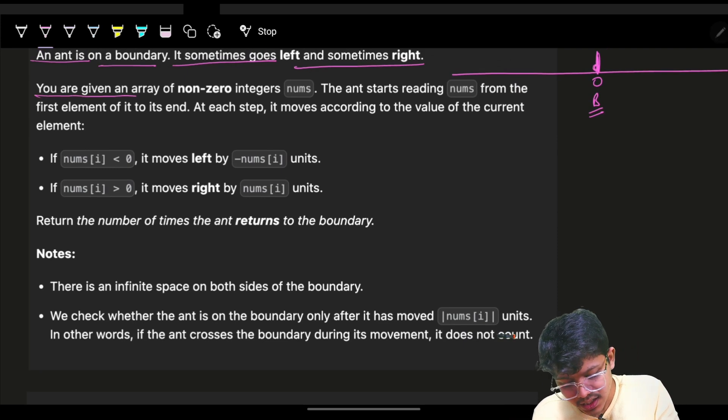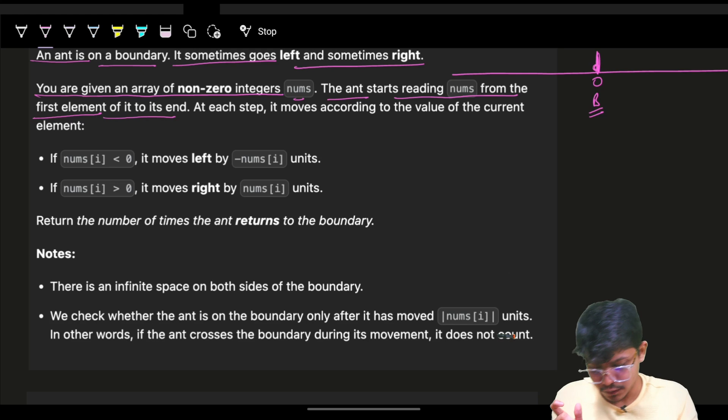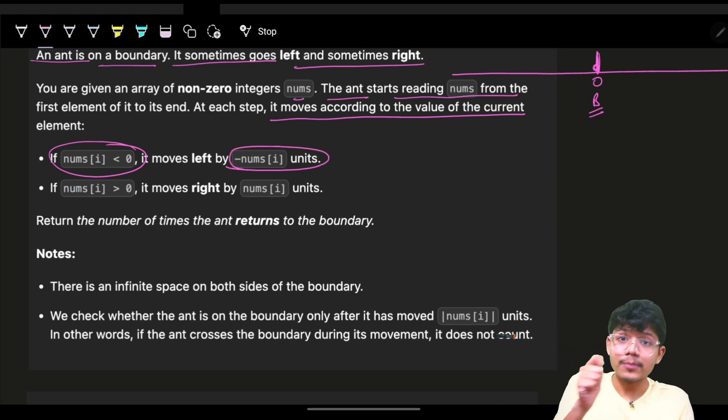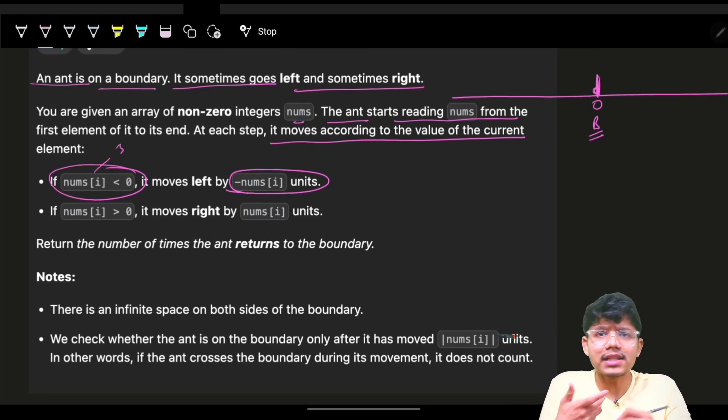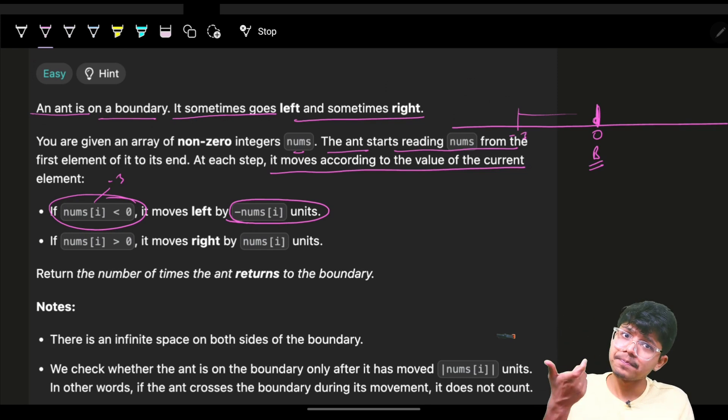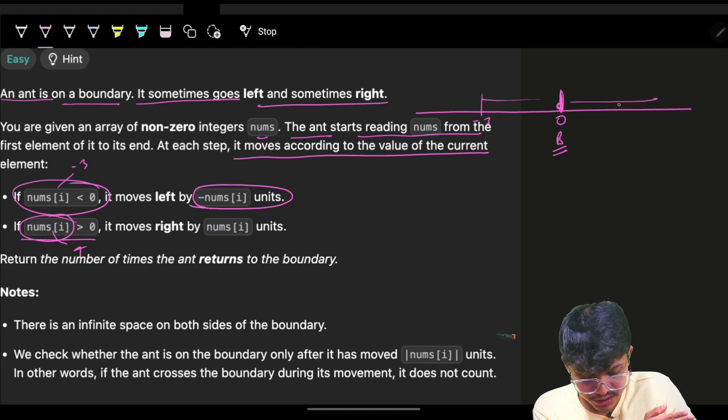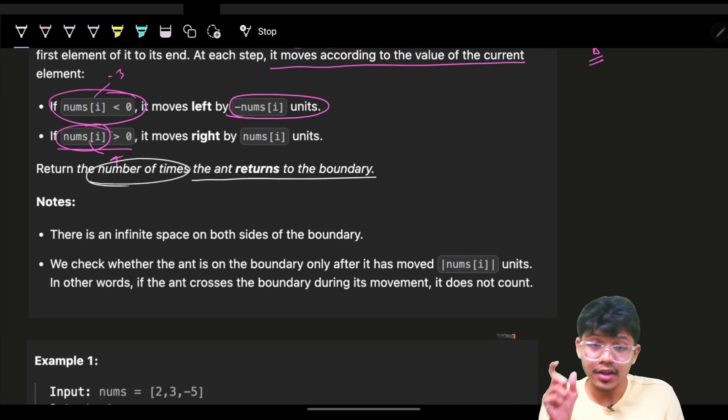You are given an array of non-zero integers nums. The ant starts reading nums from the first element to n, from i equals zero to i equals n minus one. At each step, it moves according to the value of the current element. If nums[i] is less than zero, I will move left by nums[i] units. Initially, if my nums[i] is minus three, I will move left three distance to a new position which is minus three from the current position. If it is positive, like four, I will move right four units to location four. We have to return the number of times the ant returns to the boundary. The boundary we have imagined as origin, so how many times will the ant come to origin?